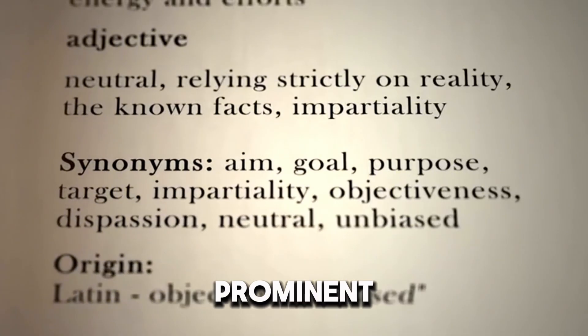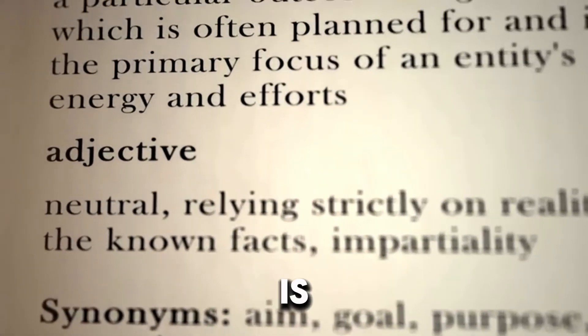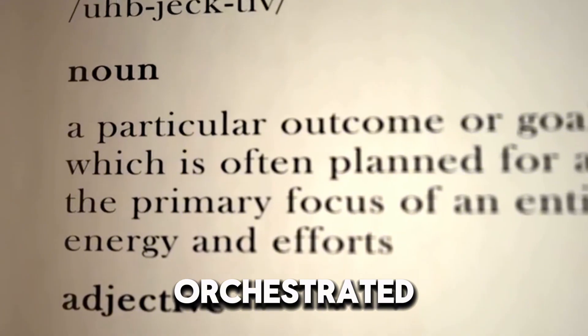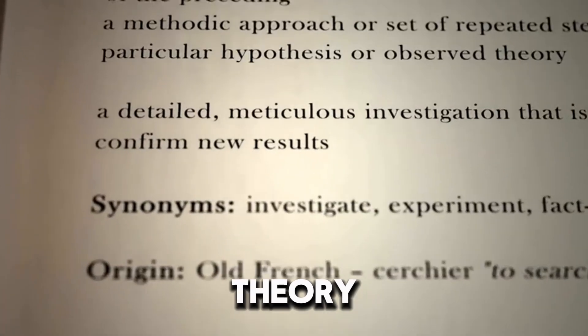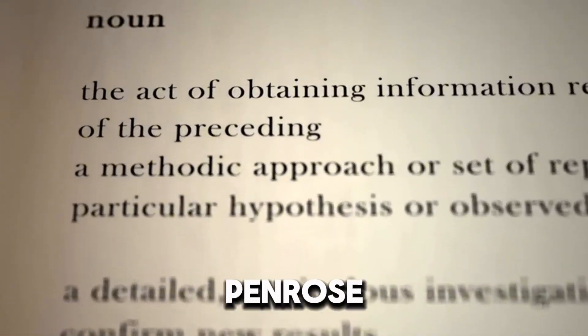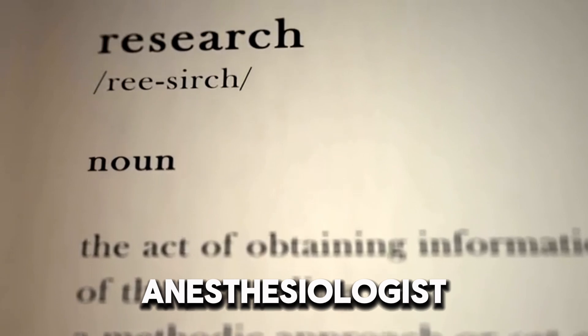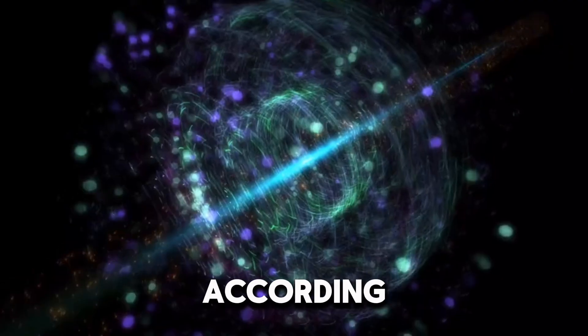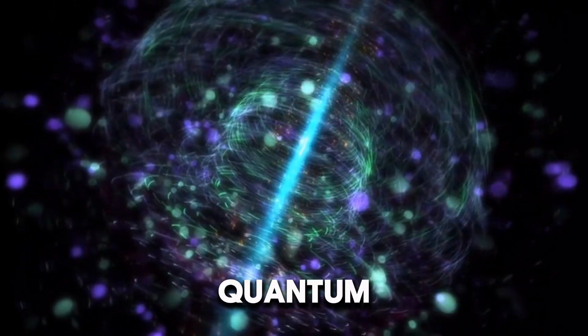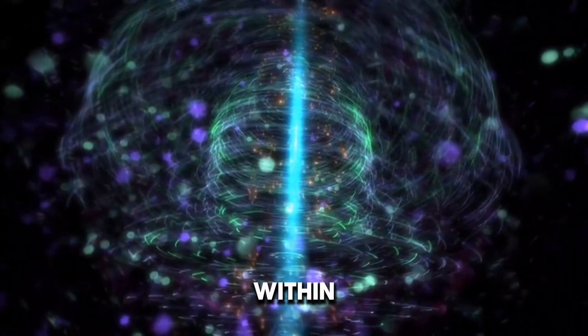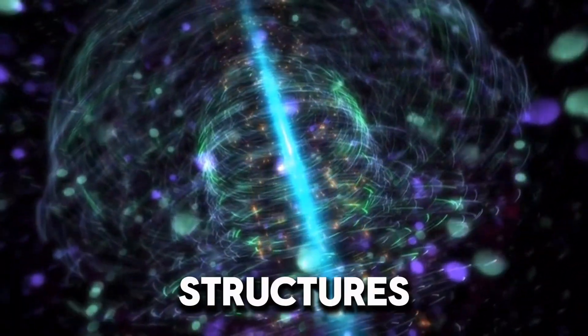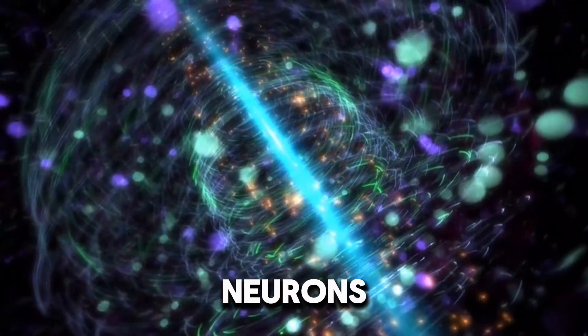One of the most prominent theories in this realm is the Orch-OR, orchestrated objective reduction theory, proposed by physicist Roger Penrose and anesthesiologist Stuart Hameroff. According to Orch-OR, consciousness arises from quantum computations occurring within microtubules, tiny structures within the brain's neurons.